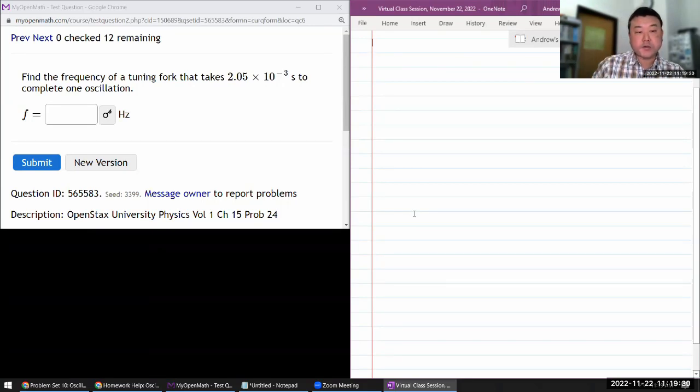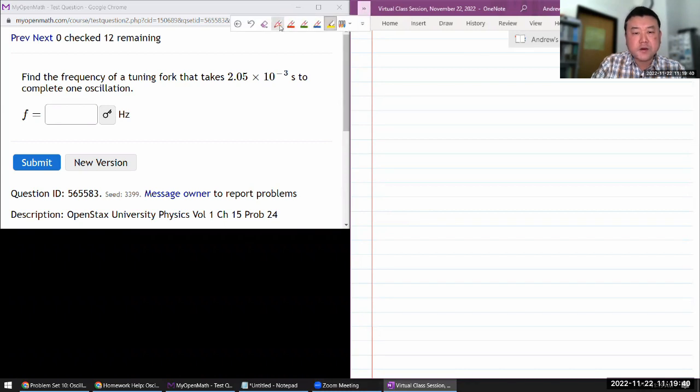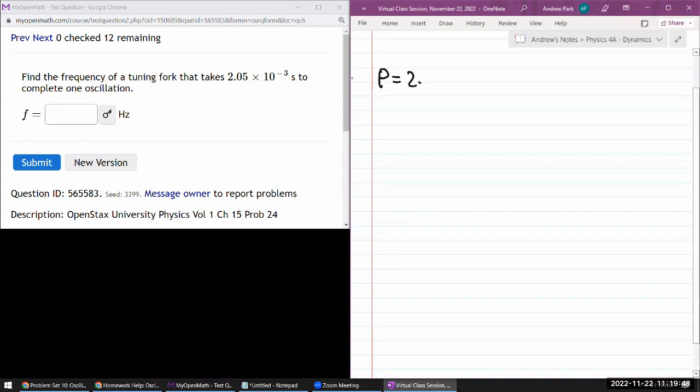Okay, so this question asks find the frequency of a tuning fork that takes this amount of time. The question is giving us a period because it's the amount of time to complete one oscillation, so my period is 2.05 times 10 to the minus three seconds.